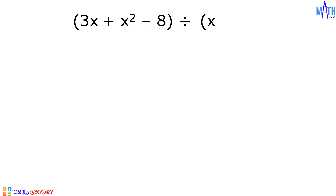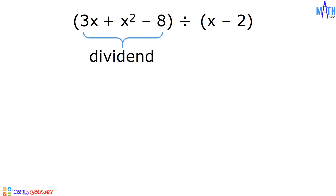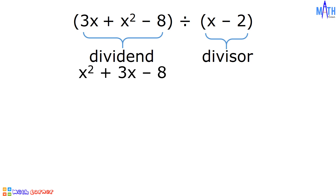Let us begin by dividing 3x plus x squared minus 8 by x minus 2. In this expression, 3x plus x squared minus 8 is the dividend, x minus 2 is the divisor. We need to arrange the dividend and the divisor in descending powers of the variable. We need to write them in standard form. The standard form of the dividend, 3x plus x squared minus 8, is x squared plus 3x minus 8.